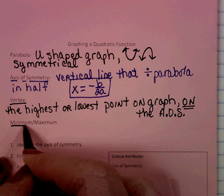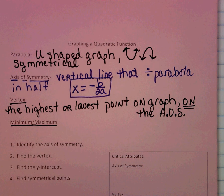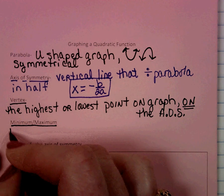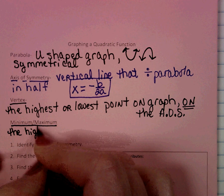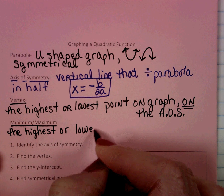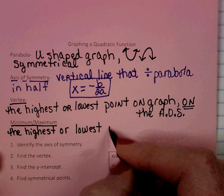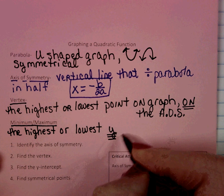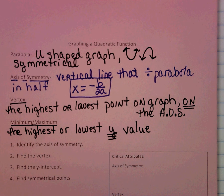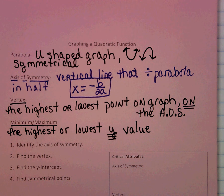Some critical attributes we refer to, especially when we talk about the vertex, are minimum or maximum. This is talking about the highest or lowest y-value specifically — like, what is the highest elevation on our mountain? So when they ask what is the minimum or maximum, we are referring to the y-value.